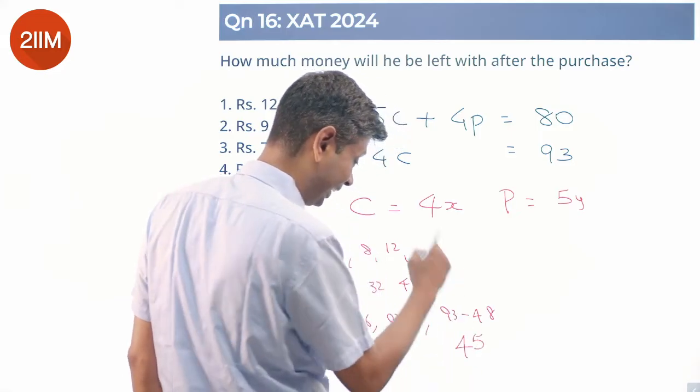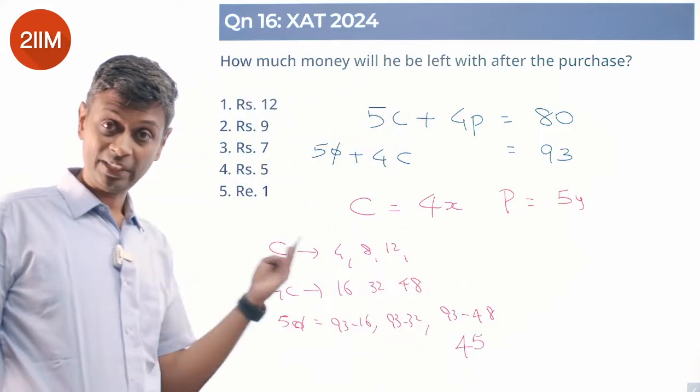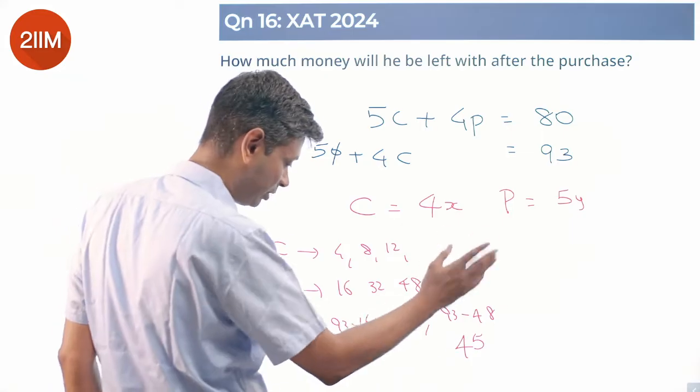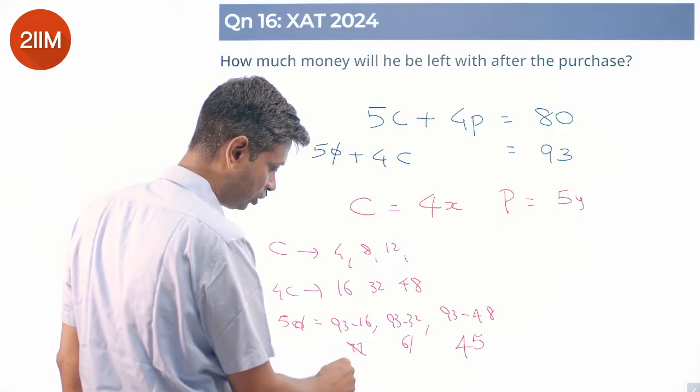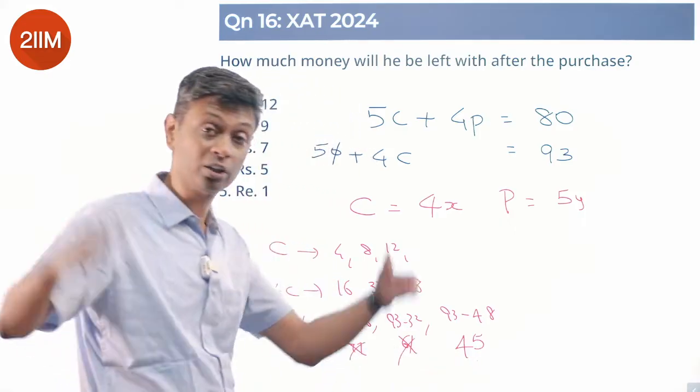This is 45. I like it because that's a multiple of 5, that can work. This is not a multiple of 5. This is 61. This is 77. These two don't work. Only this works. We are through.